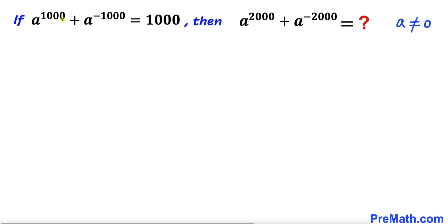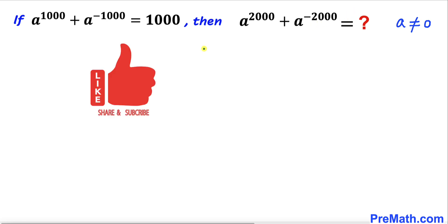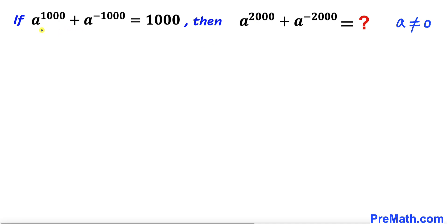Welcome to Pre-Math. In this video, we have been given a^1000 + a^(-1000) = 1000, and we are going to find the value of a^2000 + a^(-2000). Please don't forget to give a thumbs up and subscribe. Let's go ahead and get started.